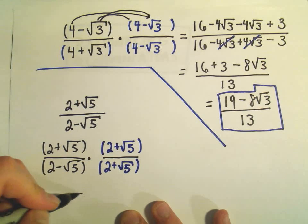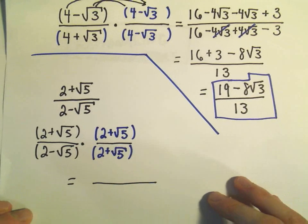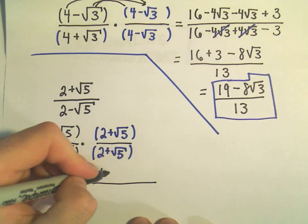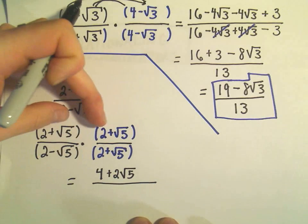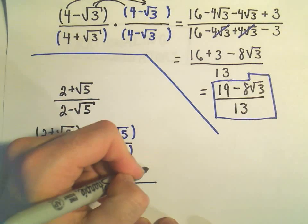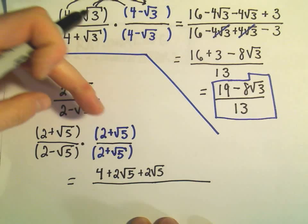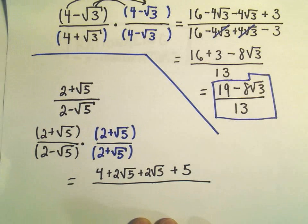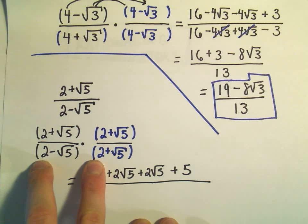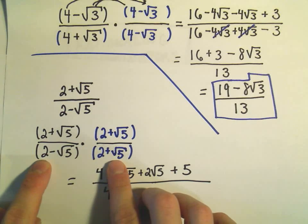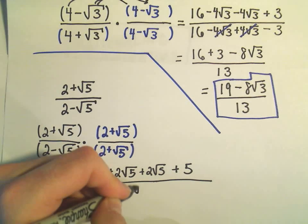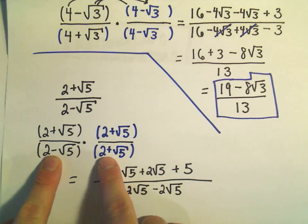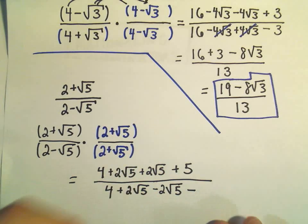It's just being careful with our factoring. So we have 2 times 2, which will give us a 4. We'll have 2 times square root of 5, which will be 2 square root of 5. On the inside, we're going to get another 2 square root of 5. And then we'll have positive root 5 times positive root 5, which is positive square root of 25, which is just positive 5. And then in the denominator, we have 2 and 2, which is 4. On the outside, we'll get a positive 2 square root of 5. On the inside, we'll get a negative 2 square root of 5. Then we have a negative times a positive, which is a negative. And the square root of 5 times the square root of 5 is just 5.